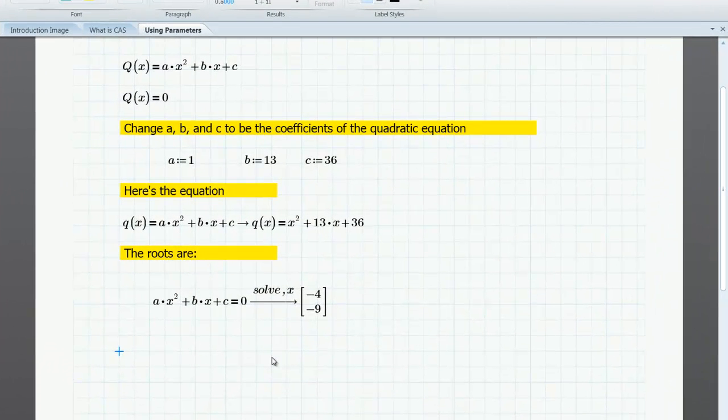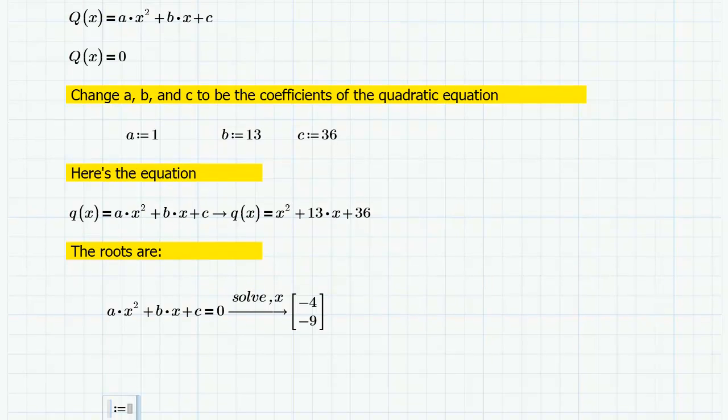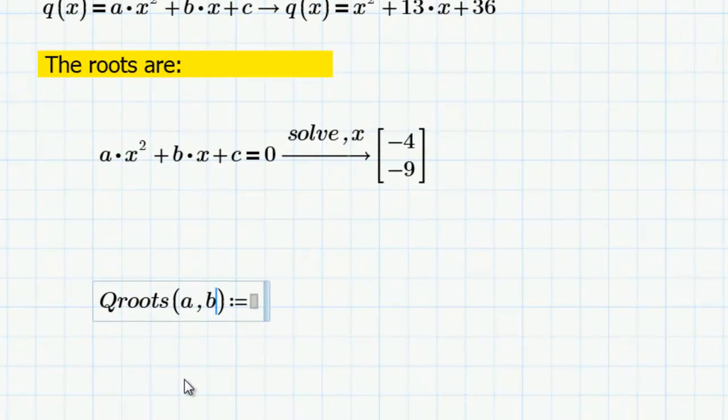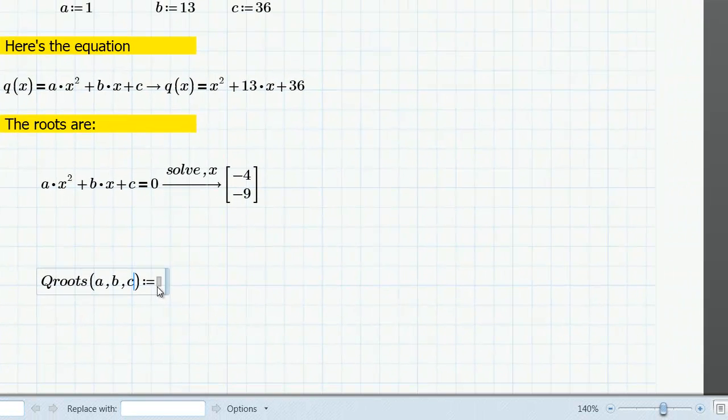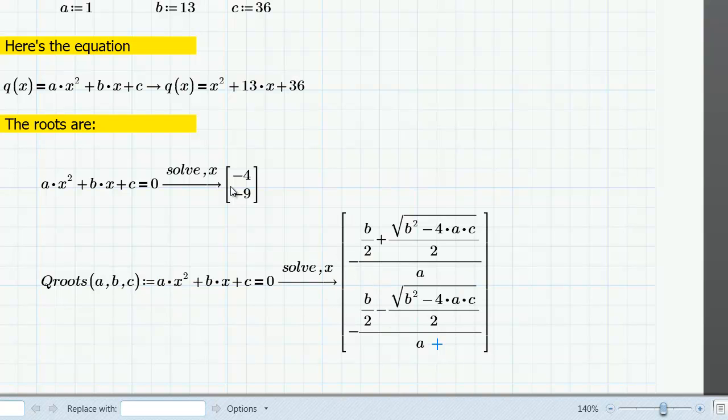Now it is also possible to take this one step further and create a function that takes the coefficients a, b, and c as inputs and then outputs the results. To create this function, I'll start with a definition operator. So I'm going to go to Math, Operators, Definition. And on the left side, I'm going to type a name for the function, qroots, and I'm going to list a, b, and c as parameters to that function. Now I'm going to click over on the right side, and then I'm going to go up and take my solve expression, copy that, go down here, and paste it. And when I click out of the region, I no longer have the numerical result, I have the symbolic result. And the reason for that is a, b, and c are now parameters inside of this function. So basically a, b, and c are local variables.